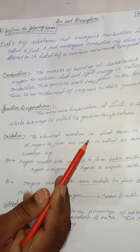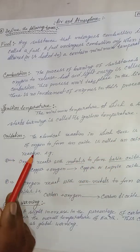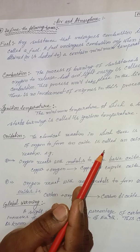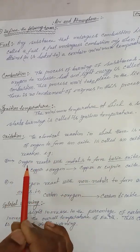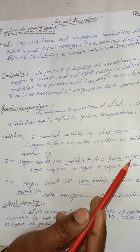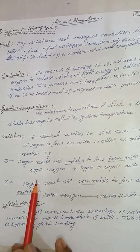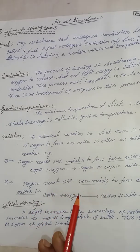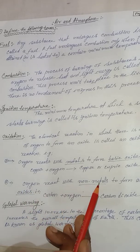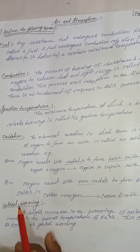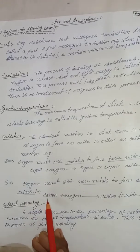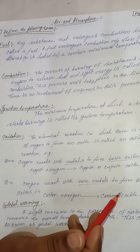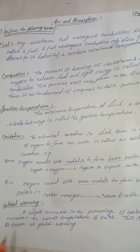Oxidation: the chemical process in which there is addition of oxygen to form an oxide is called the oxidation reaction. For example, oxygen reacts with metals to form basic oxides — related to bases. Copper reacts with oxygen to form copper oxide, an acidic oxide. Oxygen reacts with non-metals to form acidic oxides. Carbon plus oxygen forms carbon dioxide, which reacts with water to form carbonic acid.